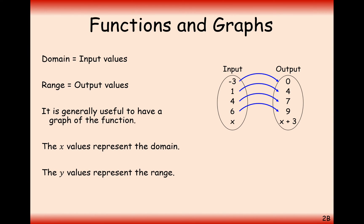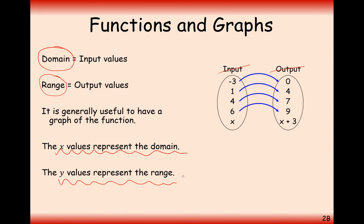When we were talking about mappings, we were talking about input values getting mapped to output values. Now we're just going to give input and output a bit more of a posher word. Input is domain and range is output. So when you think of domain, think of the x-coordinates, and when you think of range, think of the y-coordinates.